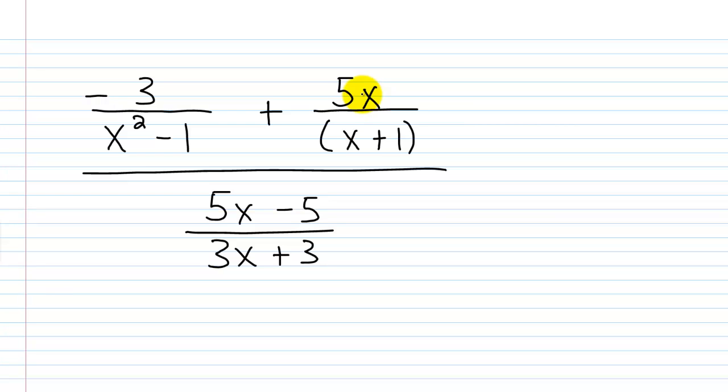So if we look at our problem here, we have negative 3 over x squared minus 1, then plus 5x over x plus 1, and then this is over 5x minus 5 over 3x plus 3. So you can kind of see that this part right here is the numerator for the complex fraction, and this part down here is the denominator for the complex fraction.